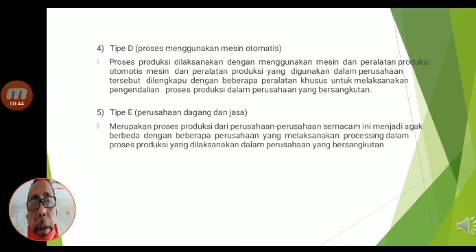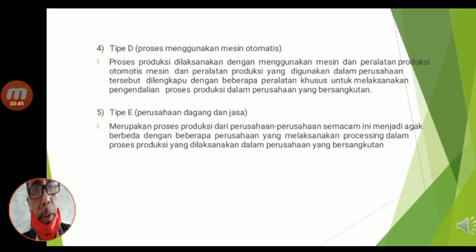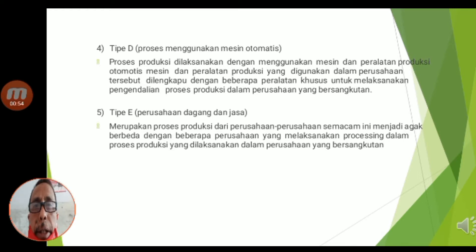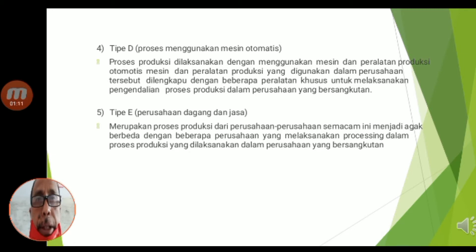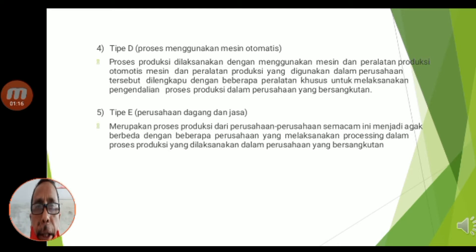Untuk itu, pada siang hari ini saya akan melanjutkan tentang proses produksi massal, yaitu pada KD 3.10. Kemarin sebagian sudah saya sampaikan dan ini ada kelanjutan dari keterangan saya kemarin, yaitu tentang berdasar penyelesaian proses produksi ada lima tipe: tipe A, tipe B, dan tipe C yang sudah saya terangkan. Berikutnya ini nanti ada tipe D dan tipe E.